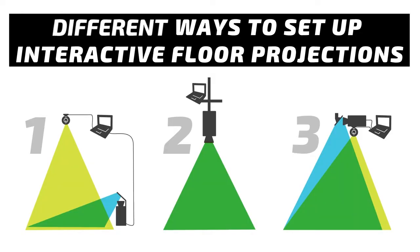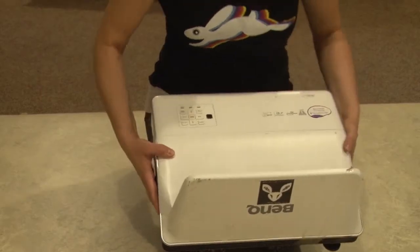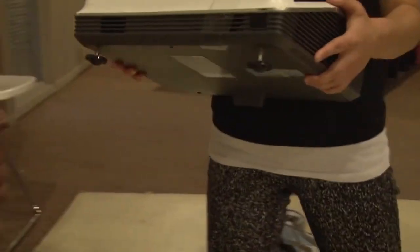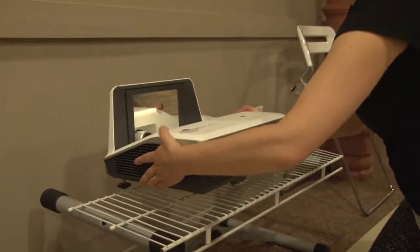There are a few different ways to set up your floor projection. The first way involves an ultra-short throw projector. Set your ultra-short throw projector on a stand near the ground.